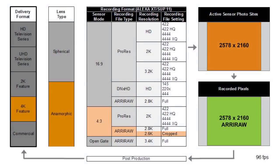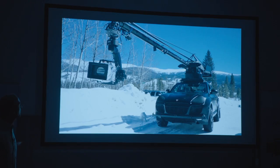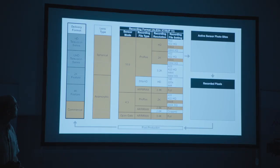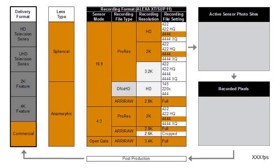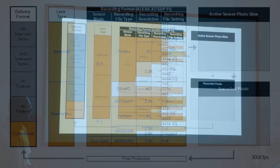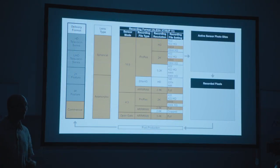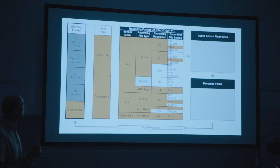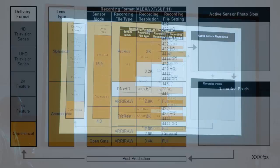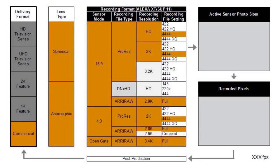For commercials — anything goes. People do 4x3, 16x9 ProRes, ARRI RAW, and mix and match freely. I considered trying to list every format we've seen in commercials, but that would be overwhelming. They're very creative and try out new formats. We'll likely see 3.2K appearing in commercials. DNxHD hasn't been seen much in commercials, and 2.6K is just coming out, so that's no surprise.